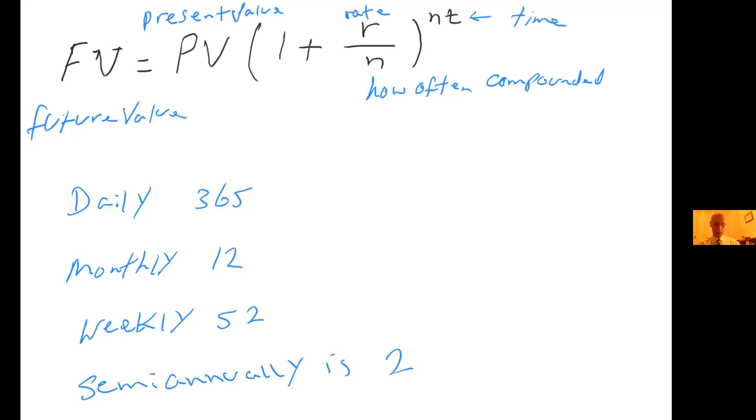Now let's go to the next page and use this information. Future value equals present value times 1 plus r over n to the power of n times t. So future value we're going to calculate. Present value is $2,000. 1 plus rate is 5.5 percent. Remember, a percent is a number divided by 100. So 5.5 divided by 100 is 0.055.